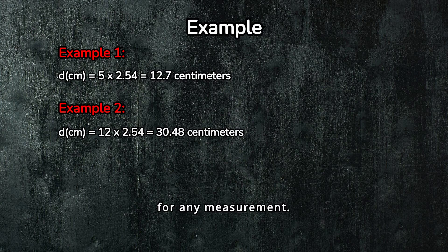And it works for any measurement. Just take the number of inches and multiply by 2.54 to get the centimeters. Now, let's switch it up a bit. What if you want to go from centimeters to inches? You just do the reverse. Divide the number of centimeters by 2.54.